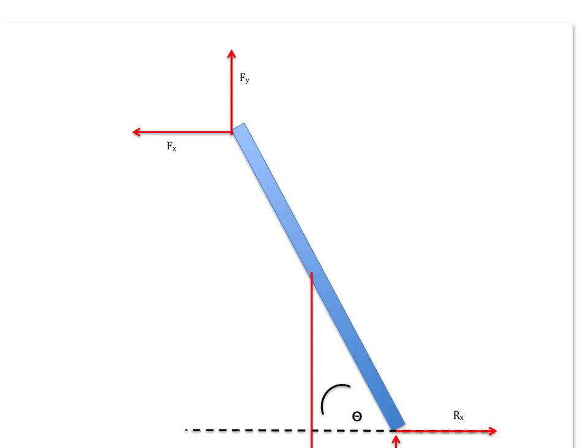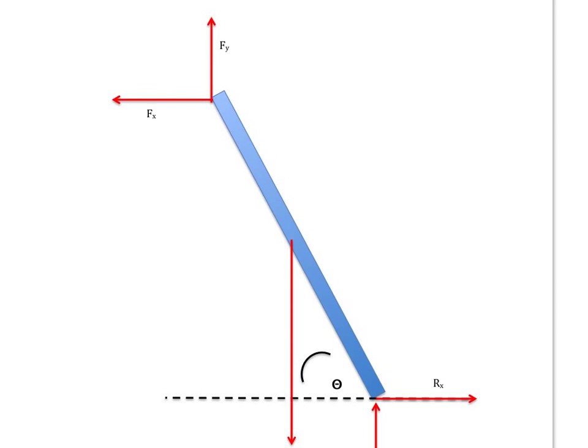My main goal in this example is to talk about how to find the lever arm. Remember that the lever arm is that distance from the line of action. Let's start with the Fy force. Fy is going up, but the line of action is a line that goes all the way up and down. The lever arm is the line from the axis of rotation to this line of action — it always hits it at right angles.